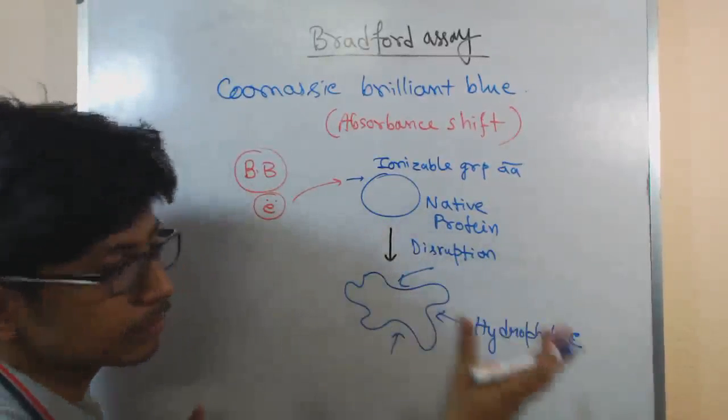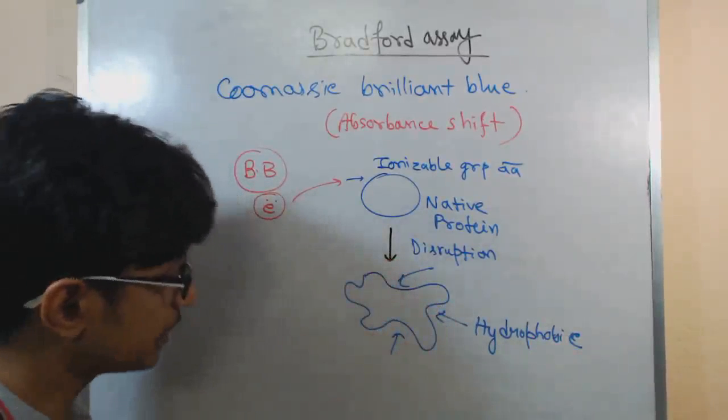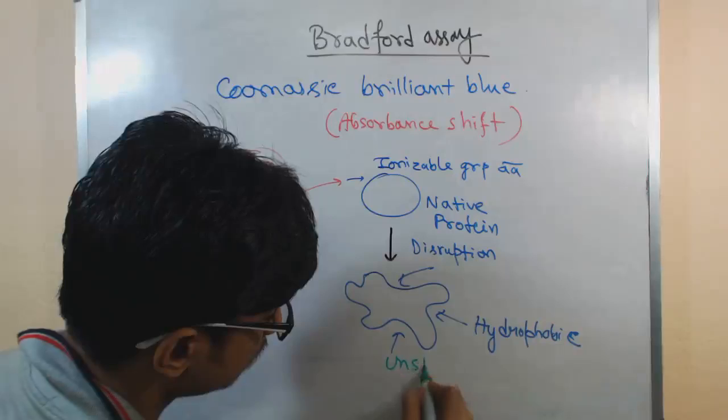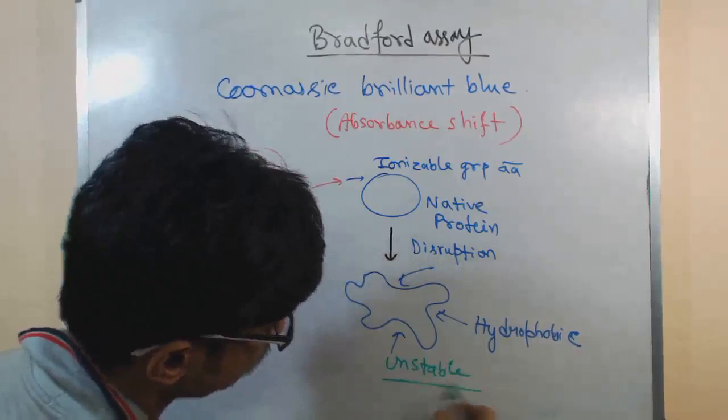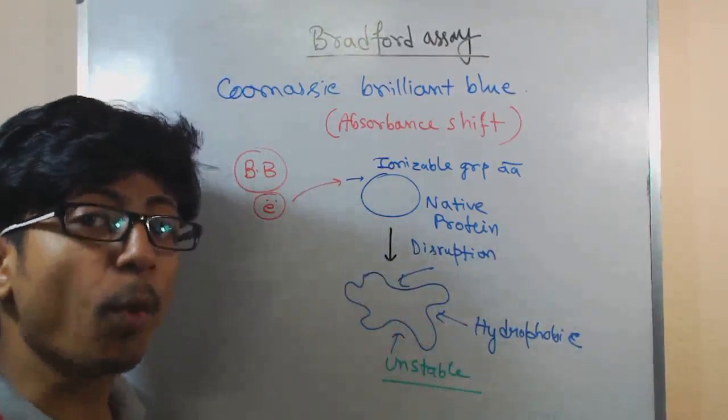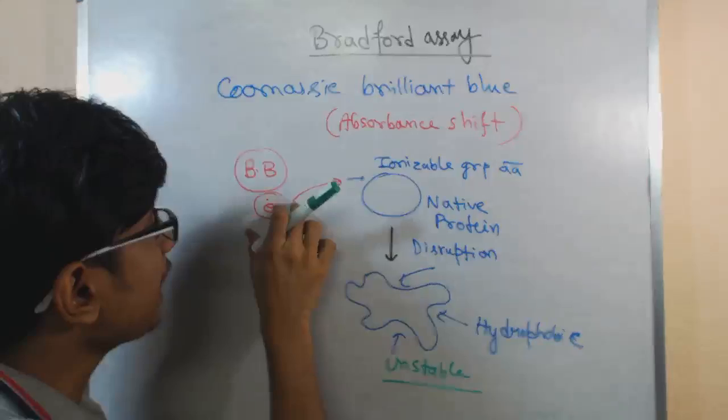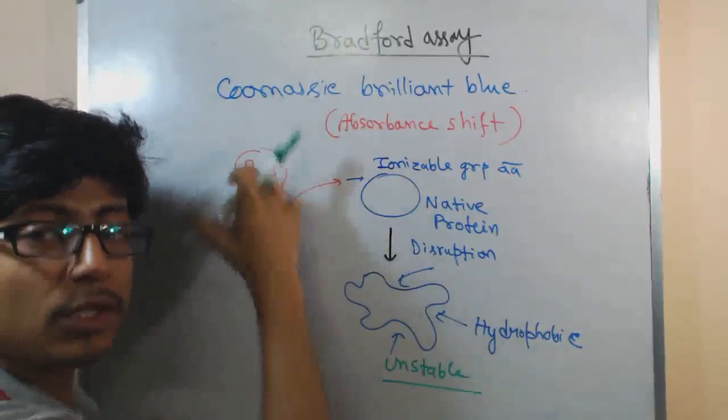It is now outside. So now this protein becomes unstable. It is now unstable. So this dye is making this protein unstable. Why? To combine with this protein, because this dye in its form, in this form is also unstable.